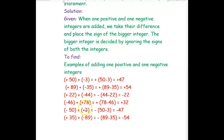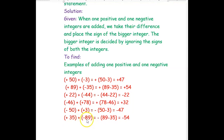Example 4: negative 46 plus positive 78 — 78 is the bigger number, sign is positive, 78 minus 46 is 32, result is positive 32. Example 5: negative 50 plus positive 3 — 50 is the bigger number, sign is negative, 50 minus 3 is 47, result is negative 47. And positive 35 plus negative 89 — 89 is bigger with negative sign, 89 minus 35 is 54, result is negative 54.